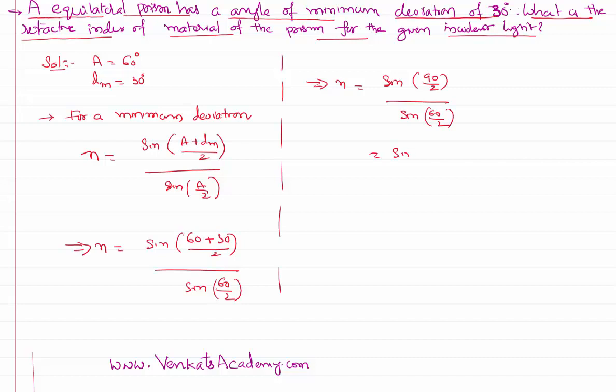That is equal to sin 45 by sin 30. We know further as per trigonometry that sin 45 is 1 by root 2, sin 30 is 1 by 2.